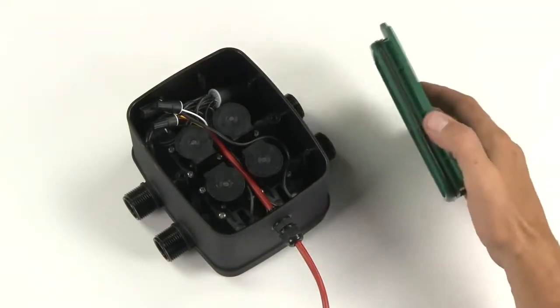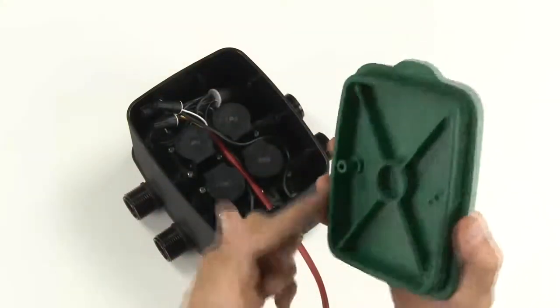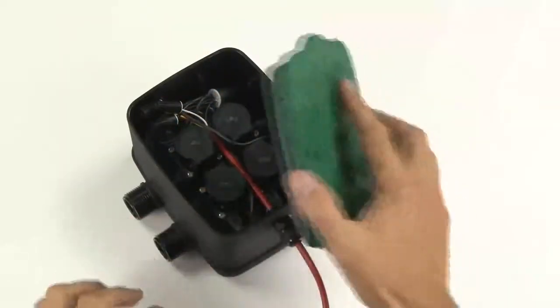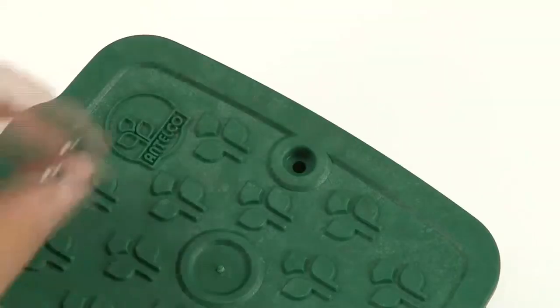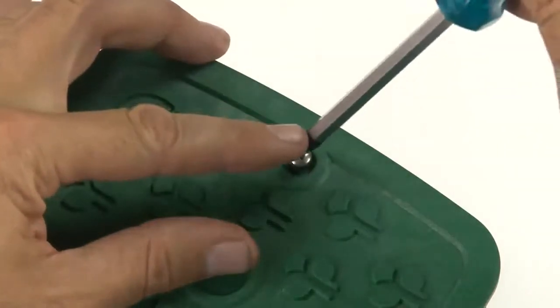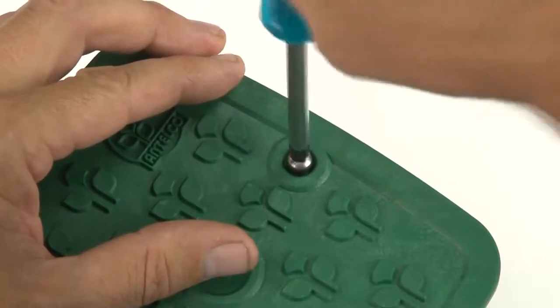Take your lid, making sure the O-ring is clean, then push it down onto the box. Insert your screws into the holes in the lid of the box, then use your Phillips head screwdriver to screw them into place.